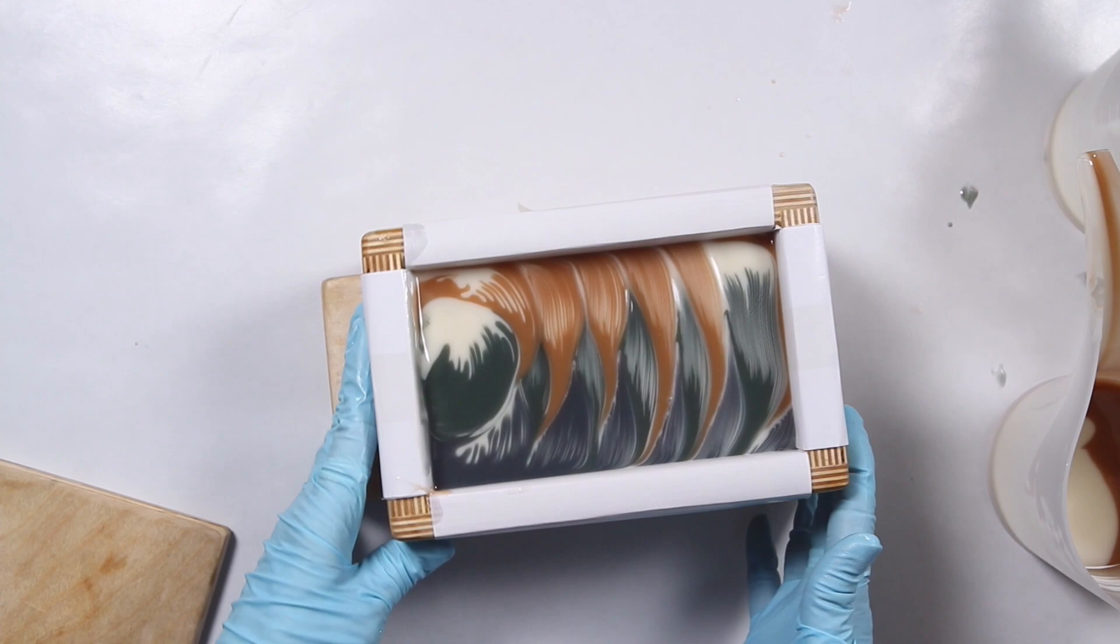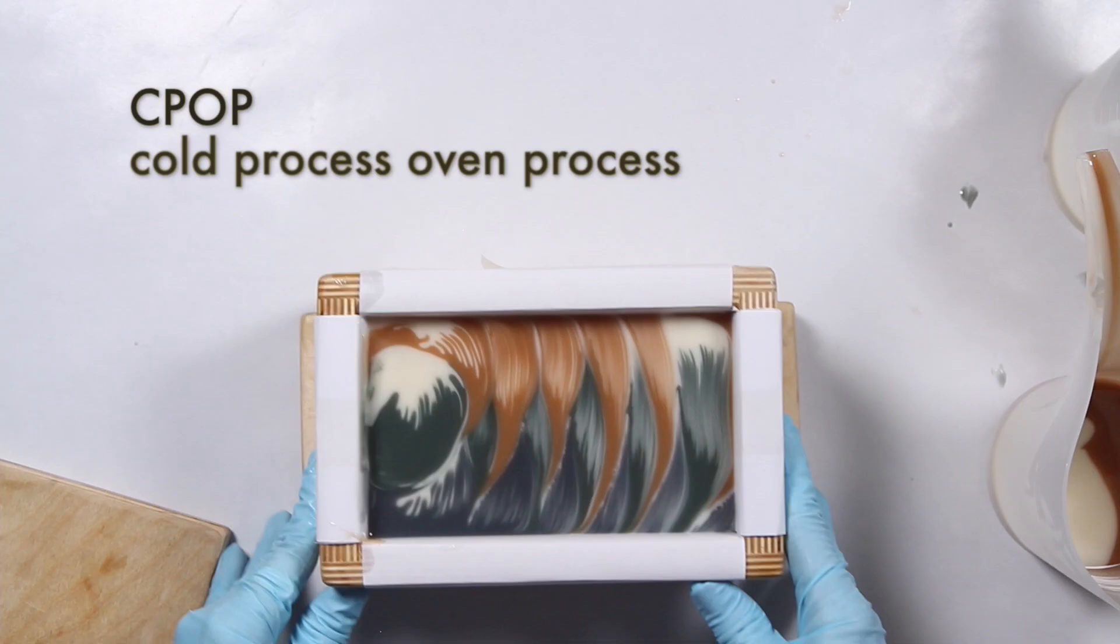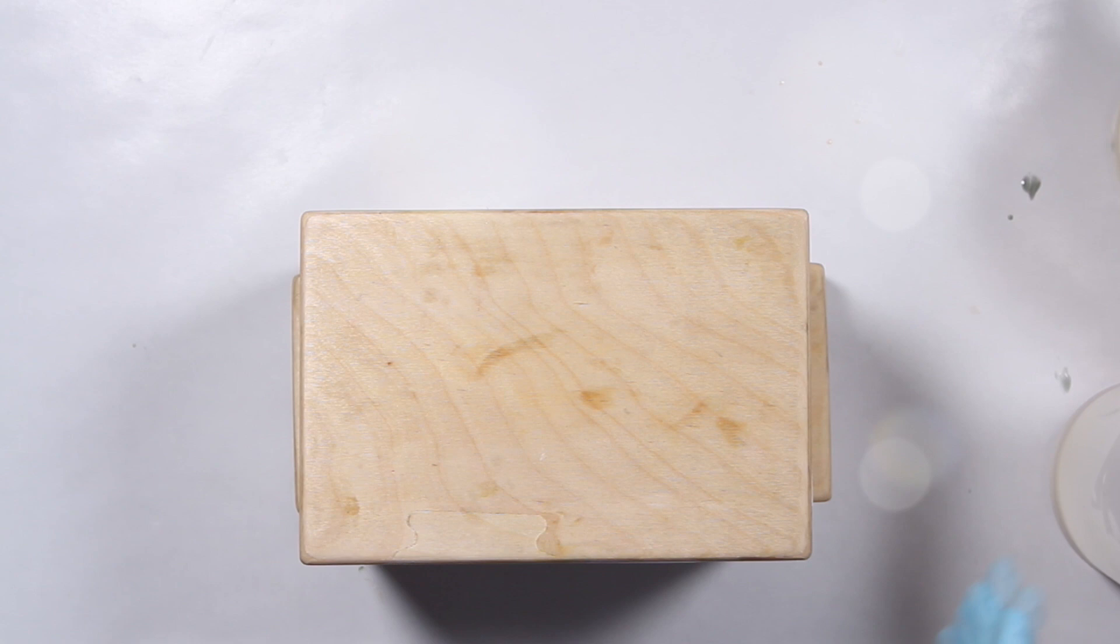I decided to use the CPOP method with this soap. CPOP stands for Cold Process Oven Process. This method uses the warmth of the oven to help ensure the soap goes through gel phase. So I preheated my oven to 170 degrees Fahrenheit, which is the lowest temperature it will go.